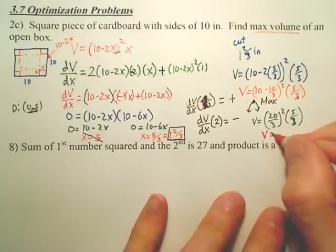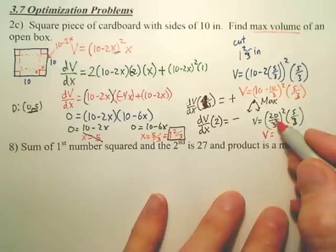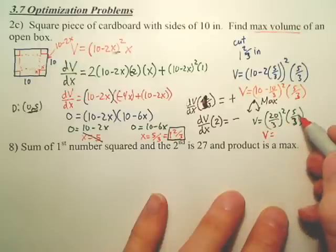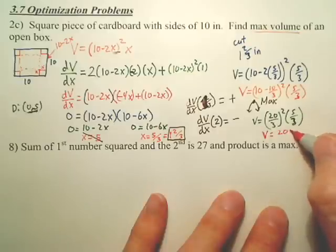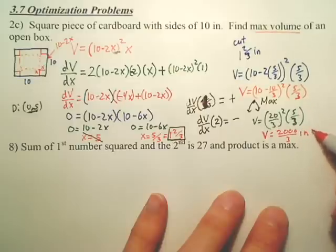Big number. Your volume ends up being 20 squared is? 20 squared is 400. 400 times 5 is? 2,000. So it's 2,000 over 3 cubic inches.